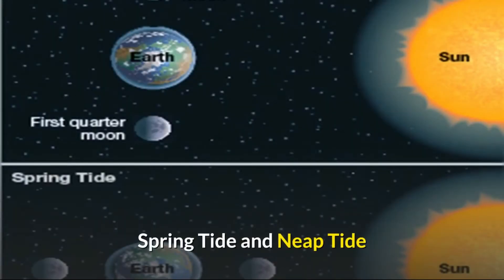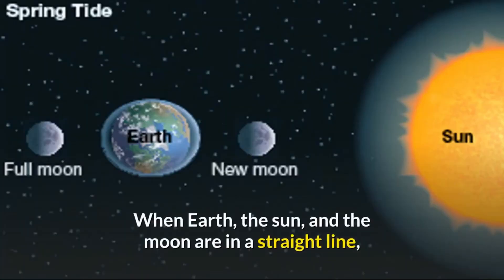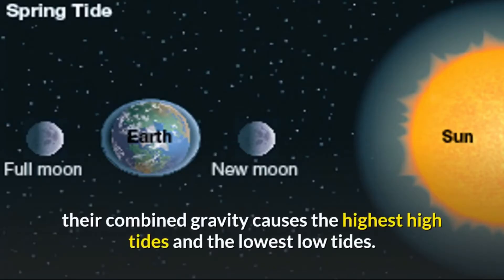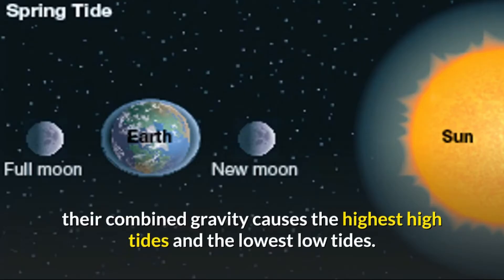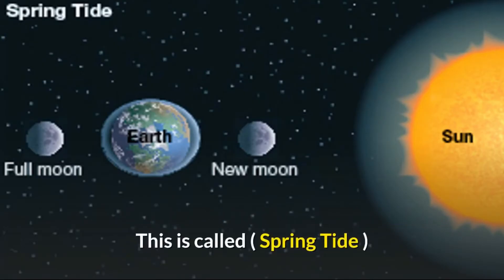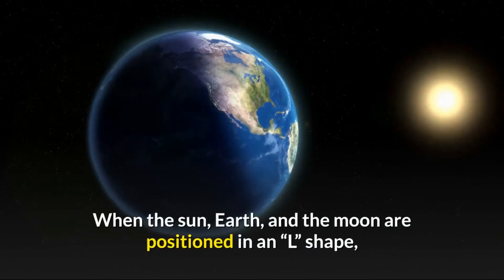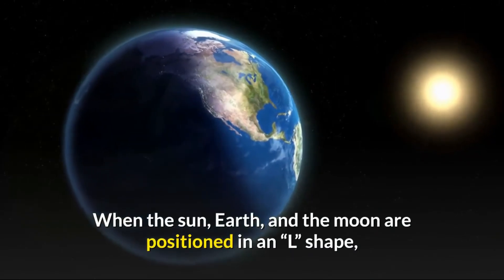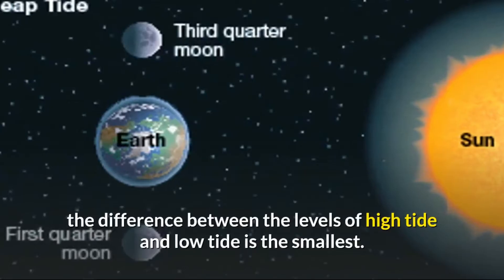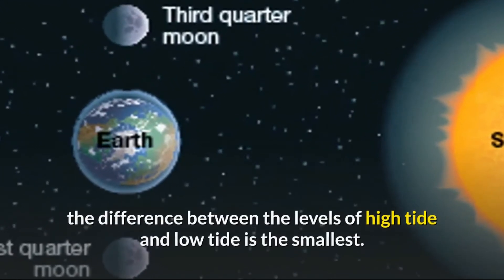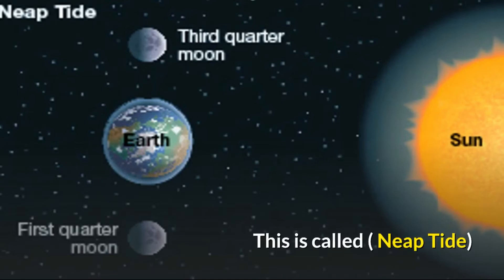Spring Tide and Neap Tide. When Earth, the Sun, and the Moon are in a straight line, their combined gravity causes the highest high tides and the lowest low tides. This is called Spring Tide. When the Sun, Earth, and the Moon are positioned in an L shape, the difference between the levels of high tide and low tide is the smallest. This is called Neap Tide.